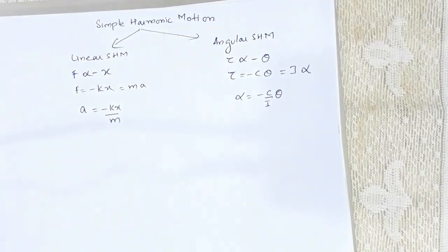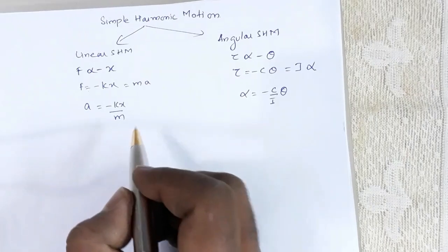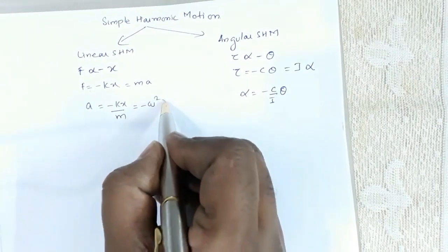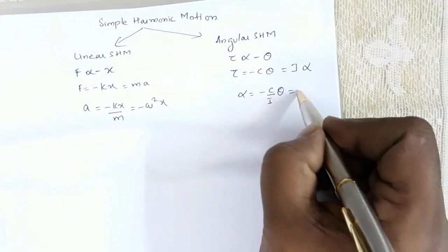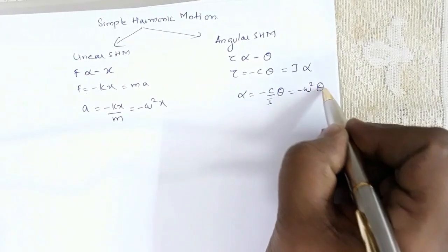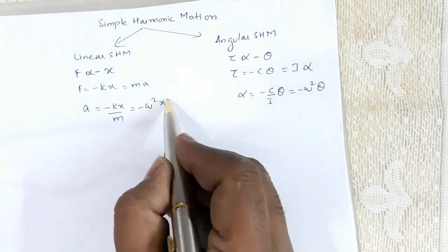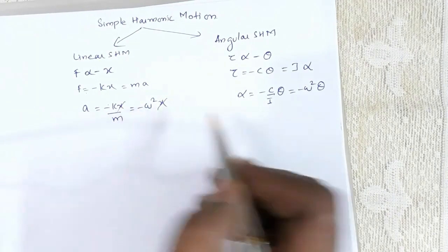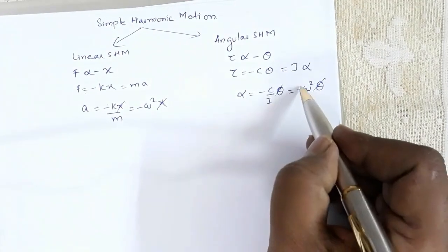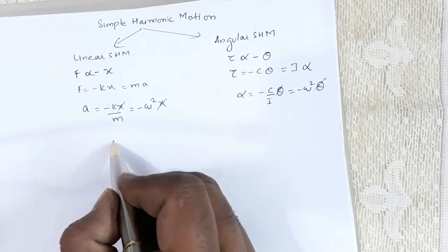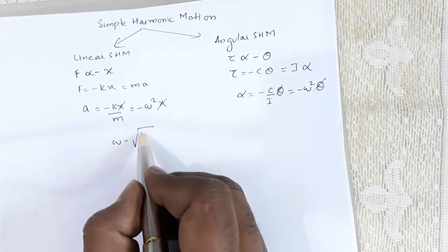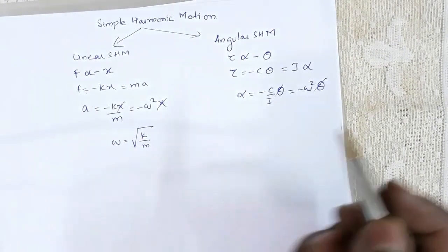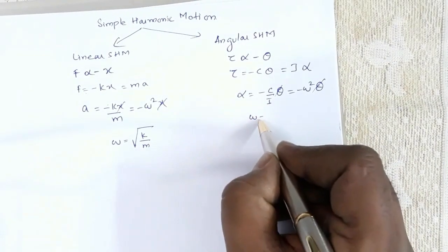Similarly, in the angular case, α = -(c/I)·θ. Now a is also equal to -ω²x, and similarly α = -ω²θ. So x and x cancel out, and θ and θ cancel out.